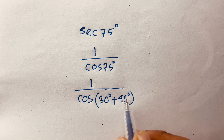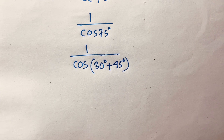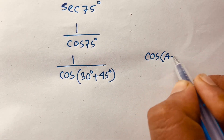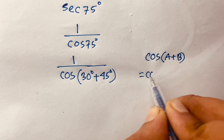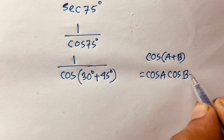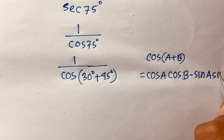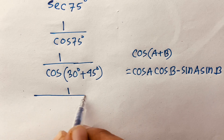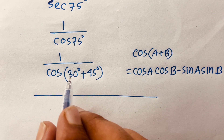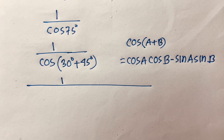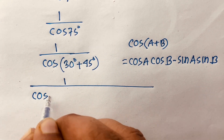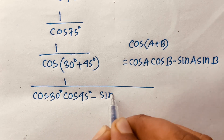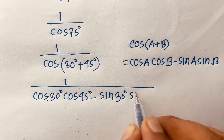Now applying the trigonometric rule for cos(a + b) = cos a · cos b − sin a · sin b. Here a = 30° and b = 45°, so the denominator becomes cos 30° · cos 45° − sin 30° · sin 45°.